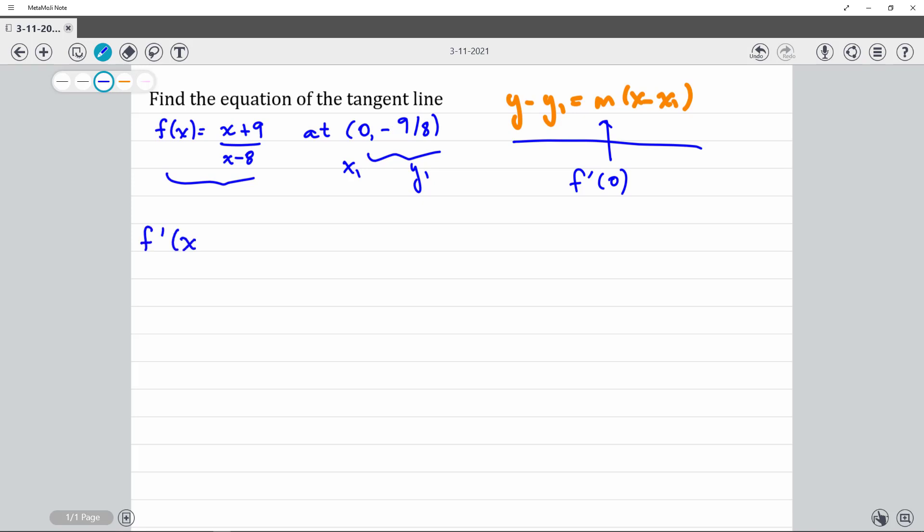Remember the quotient rule? It says take the derivative of the top, leave the bottom alone, minus take the derivative of the bottom, leave the top alone, all over the bottom squared.